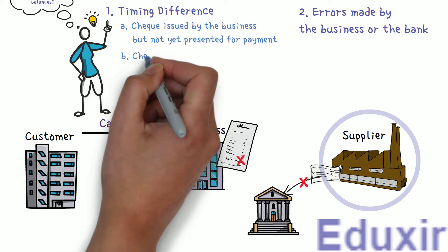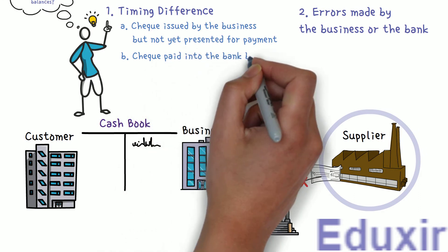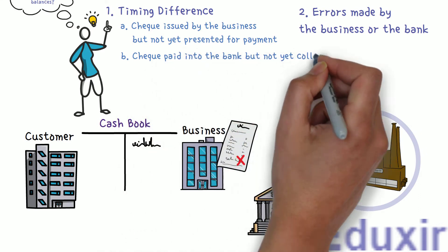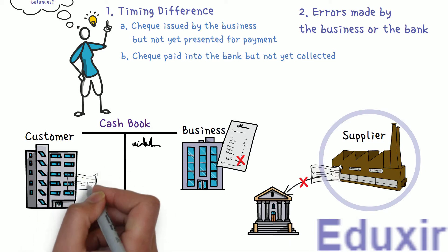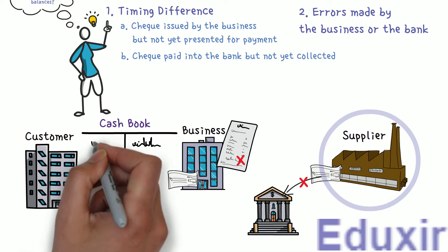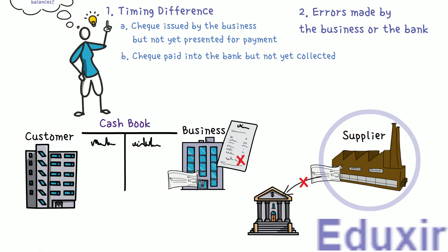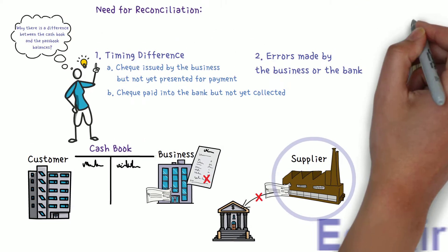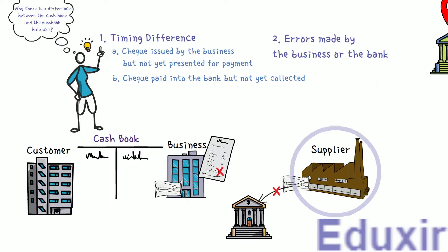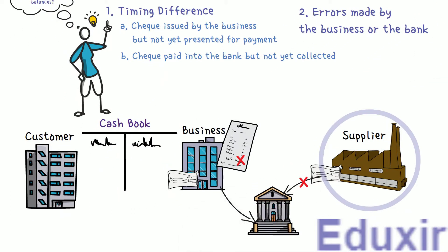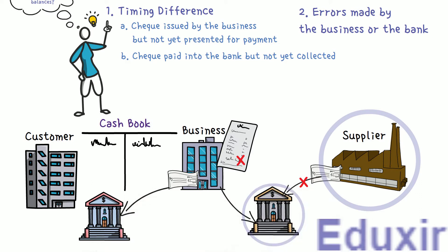The next reason is checks paid into the bank but not yet collected. When the business receives checks from its customers or debtors, they are immediately recorded on the debit side of the cashbook, so the cashbook shows more funds available. These checks could be from a bank not in the same city, or from a different branch, so the bank may not have collected the amount by the time the statement is received.